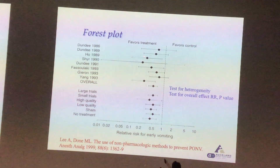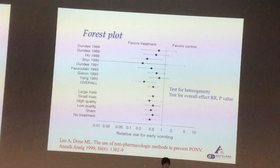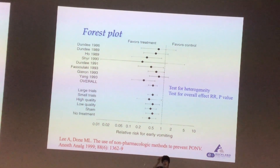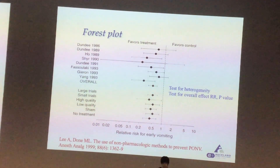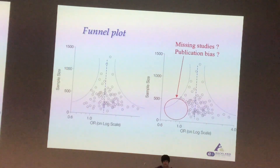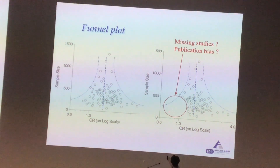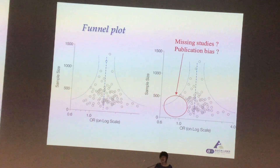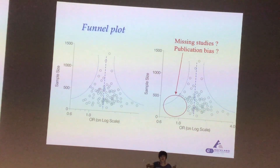What does that tell you? See the relative risk for early — significant difference, isn't it? You get more vomiting. It favors control, favors treatment. Then you have to test whether all these studies have a lot of heterogeneity or not, or publication bias or not. You look at I-squared, and the funnel plot tells you whether there's publication bias. See a lot of missing data here? In meta-analysis when they produce this, they show you the forest plot.